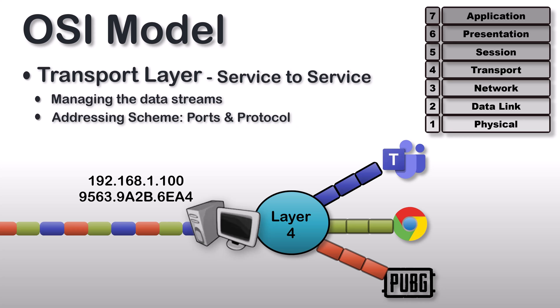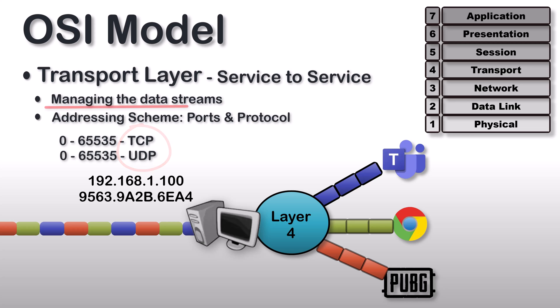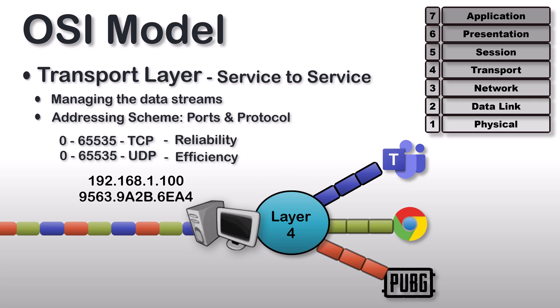Layer 4's addressing scheme involves ports and protocols. There are two protocols: TCP and UDP, and each has ports from 0 to 65535. TCP and UDP are basically two different processes for managing the data stream. TCP provides reliability and UDP provides efficiency. They are simply different processes to accomplish the goal of layer 4 of the OSI model.